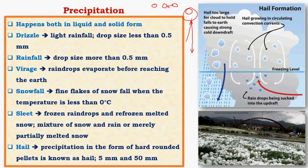Precipitation can occur in different forms like drizzle, rainfall, virga, snowfall, sleet, and hail — all these forms have different properties. Precipitation happens in both liquid and solid form. For example, if precipitation happens below freezing point it will give rise to solid form, and if it happens above freezing point it will give rise to liquid forms.